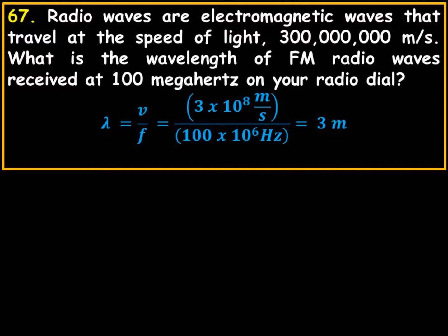And when you put in on your calculator 3 times 10 to the 8th meters per second divided by 100 times 10 to the 6th, you see meters per second over hertz is automatically going to be length, wavelength, and that's going to be meters. So that's going to be 3 times 10 to the 8th divided by 100 times 10 to the 6th is 3, and the answer is 3 meters. All right, next.